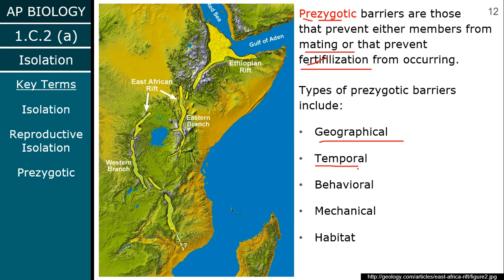Temporal barriers occur when timing doesn't align — maybe one population is out only at night and the other during the day; if they're not interacting, they're not going to mate. It could be behavioral — perhaps one population prefers a male to do a specific kind of dance to court a female, but the other prefers a different dance or song. It could be mechanical — their parts just don't match up.